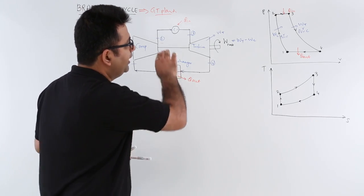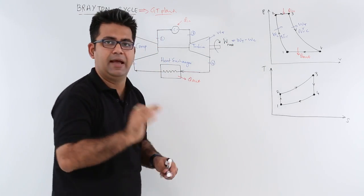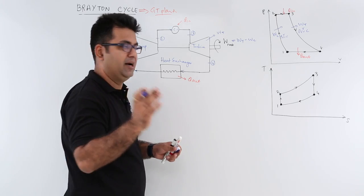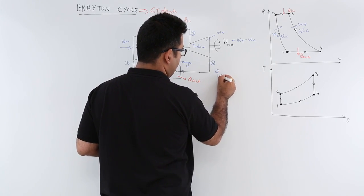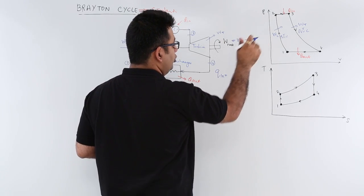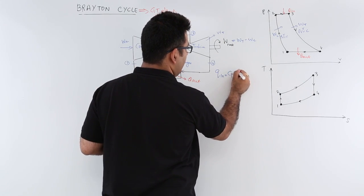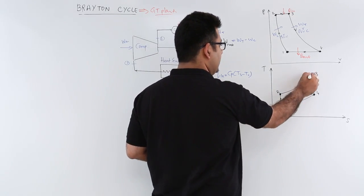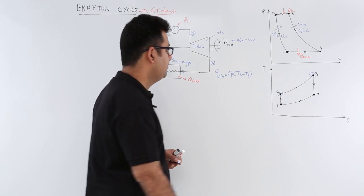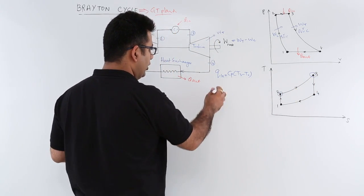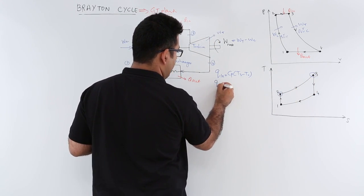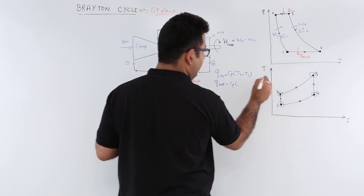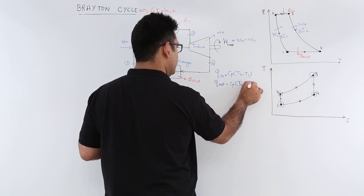Now let's do the mathematical analysis. The heat addition and heat rejection happen at constant pressure. For one kilogram of mass, Q_in is cp times (T3 minus T2). Q_out is cp times (T4 minus T1), taken as a positive value.